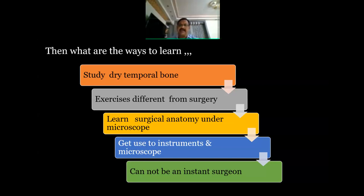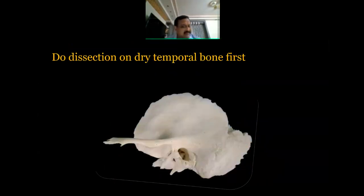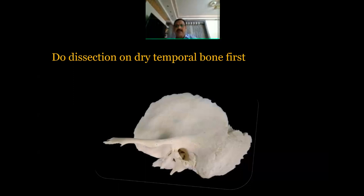These are called psychomotor skills — it is like learning to drive a car. When you start driving initially, you look at the gear consciously. With experience, you know which gear you're in just by the position, the sound of the car, and the resistance of the steering. Similarly, as you gain more experience in temporal bone dissection and ear surgery, you will automatically start doing things like an experienced driver.